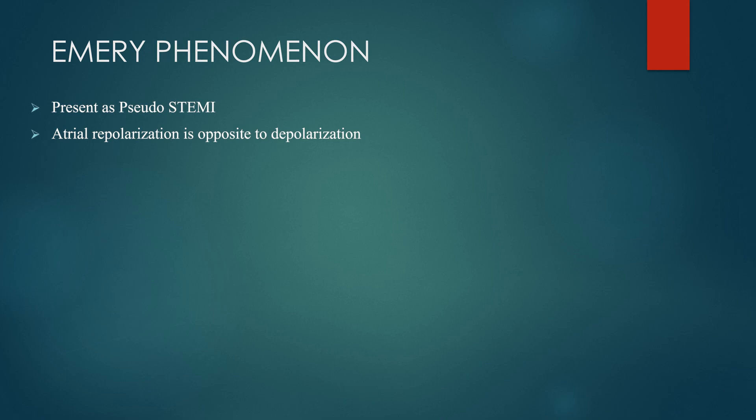This phenomenon is basically a differential of ST elevation myocardial infarction, and it presents as a pseudoSTEMI. We need to understand a few basic ECG concepts. Atrial depolarization is represented by the P waves, and there is also an atrial repolarization — called the Ta wave — that is not seen on the ECG because it is hidden within the QRS complexes. Depolarization and repolarization are opposite in direction: if the depolarization wave is upright, the repolarization wave has to be inverted.